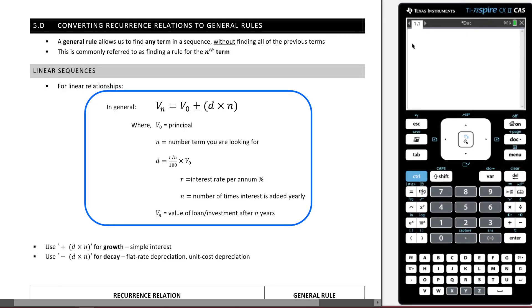Welcome back to another lesson. So today we're going to go through 5D, which is converting recursion relations to general rules. Let's give it a read. A general rule allows us to find any term in a sequence without finding all the previous terms. This is commonly referred to as finding a rule for the nth term.